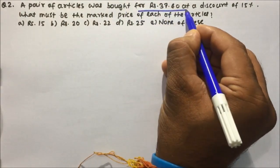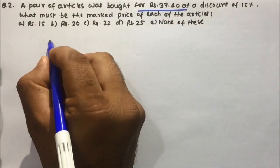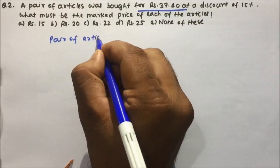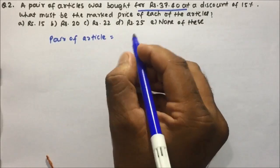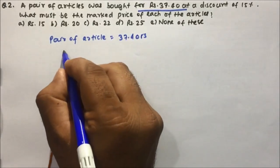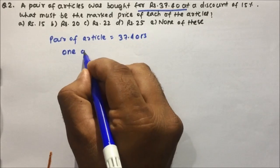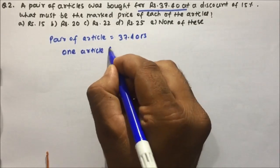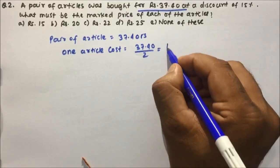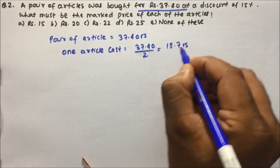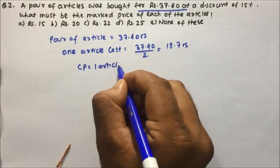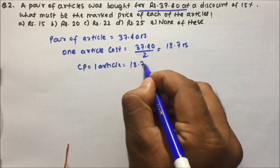Question number two: a pair of articles was bought for 37 rupees 40 paise. A pair means two articles, so the cost of one article is 37.40 divided by 2, which is 18.7 rupees. So the cost price of one article is 18.7 rupees.